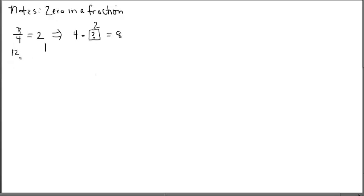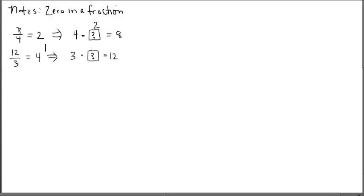Let's do another one: 12 divided by 3. I know there's not a zero anywhere in this fraction, but just work with me. 12 divided by 3 is equal to 4. So for this division problem, we can check our work by multiplication: 3 times the box has to be equal to the numerator. 3 times 4 is 12, so the box would have to be 4. We're now ready to look at our first case of zero in a fraction — I'm going to connect back to this in just a second. Roman numeral number 1.